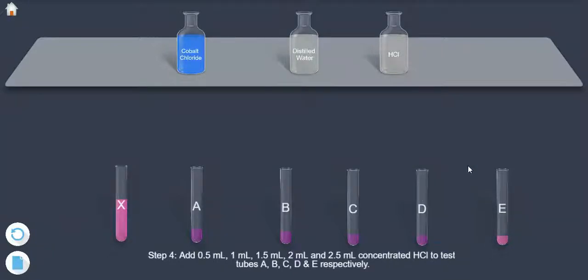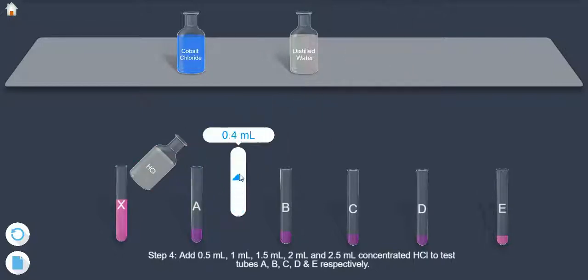Add 0.5 ml, 1 ml, 1.5 ml, 2 ml and 2.5 ml concentrated HCl to test tubes A, B, C, D and E respectively.